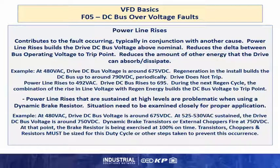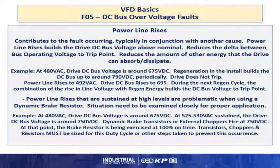Power line rises contribute to the fault occurring, typically in conjunction with another cause. Power line rises build the drive DC bus voltage above nominal, reducing the delta between the bus operating voltage and the trip point, therefore reducing the amount of energy that the drive can absorb or dissipate. For example, at 480 volts AC, the drive DC bus is around 675 volts DC. Regeneration in the install builds the DC bus up to around 790 volts DC periodically and the drive does not trip. But if the power line rises to 492 VAC, the DC bus nominal rises to 695 volts. During the next regen cycle, the combination of the line voltage rise with the regen energy builds the DC bus to the trip point on a 480 volt drive of 800 to 810 volts DC.